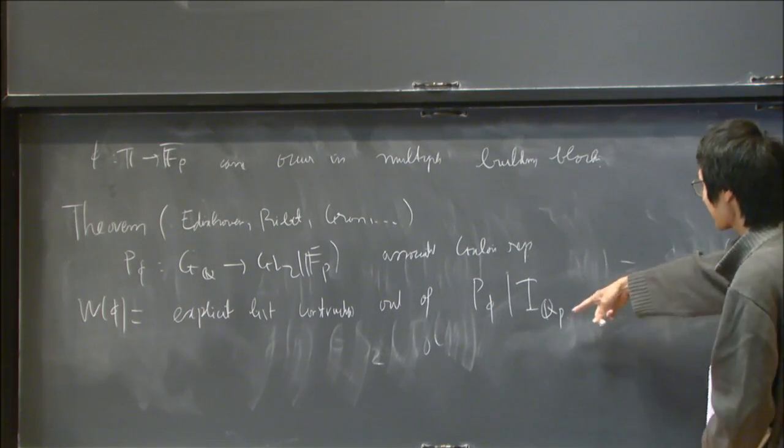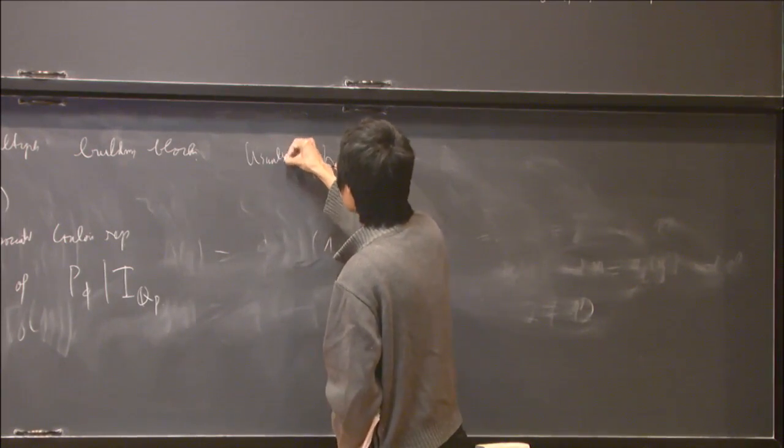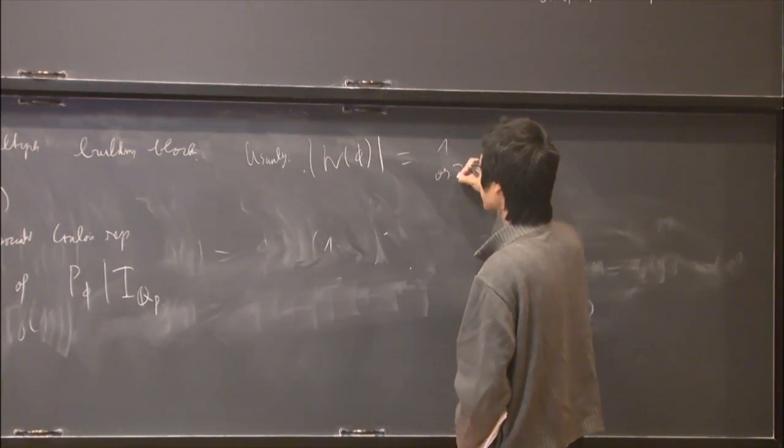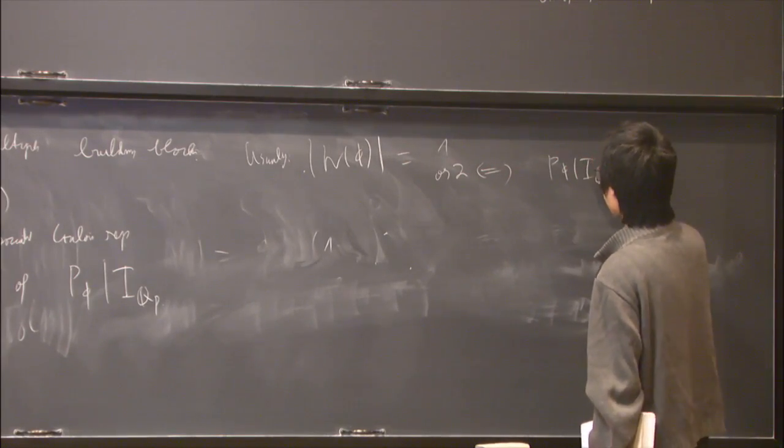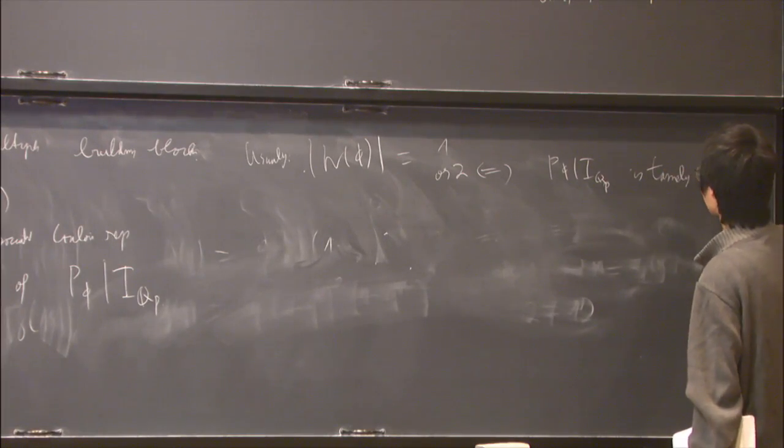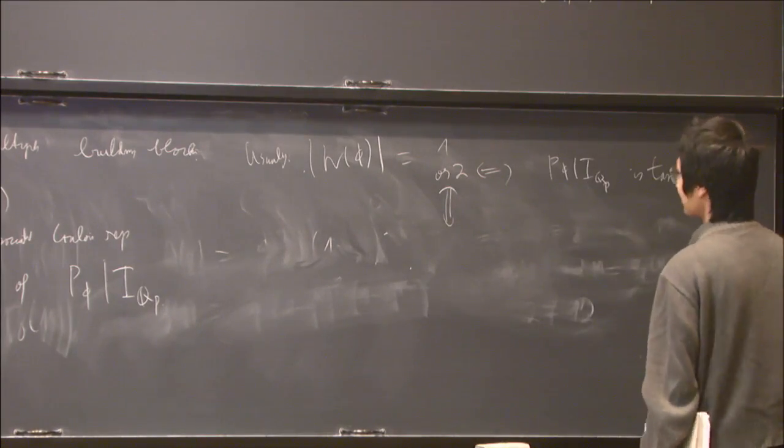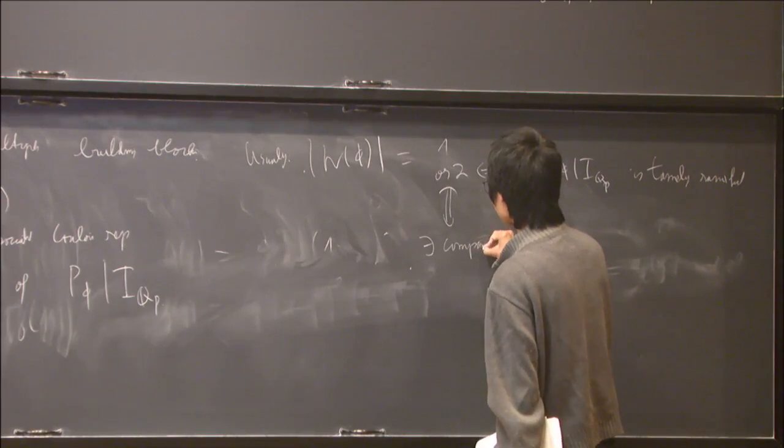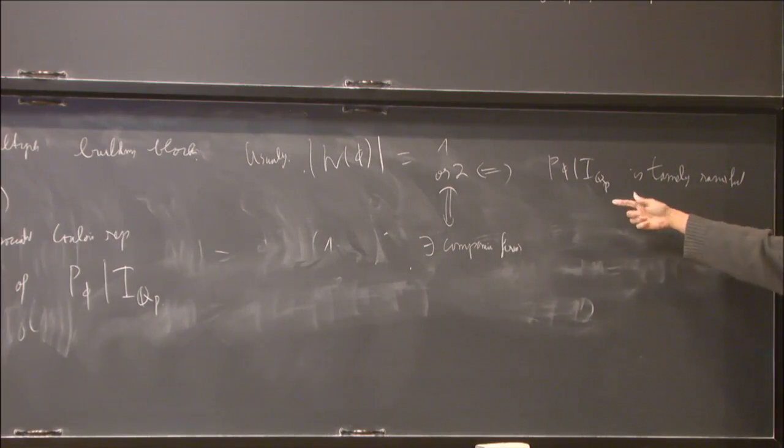And this actually explains this companion form phenomena. Namely, I will not explain what this list is, but I will explain its feature. Namely, usually, the size of this list is actually pretty small. It's one or two. And this two happens if and only if the Galois parameter on inertia is tamely ramified. And this two here exactly corresponds to the existence of companion forms. And because there are two ways in which the Galois representation of G_Q at p can be tamely ramified, it corresponds to these two kinds of companion forms.